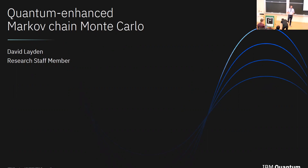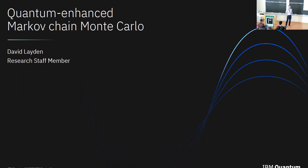This talk will be about a new quantum algorithm that we developed and then implemented for random sampling. It's intended to have three key features. First, it's meant to be natural to implement on current and near-term quantum devices. Second, it's meant to not be completely heuristic, but rather to have some formal guarantees of producing the right answer. And finally, it's meant to be eventually useful in that it solves some problem of pre-existing interest.